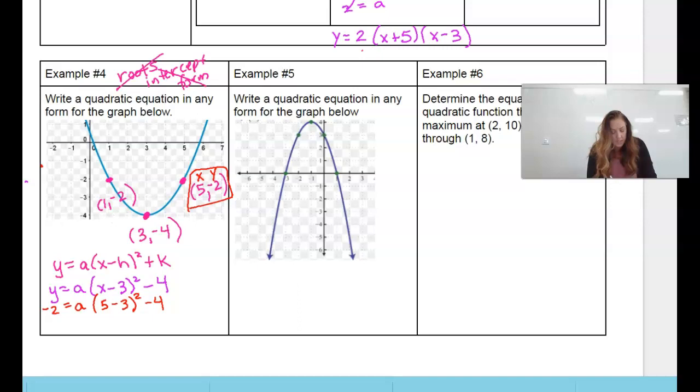So x is 5, and y is negative 2. So we'll substitute. y is negative 2. We don't know a, and x is 5. Now, this one, because we have this minus 4 at the end, I'm going to want to clean this up first. So I get negative 2 equals a times, well, 5 minus 3 is 2. 2 squared is 4. So that actually becomes 4a minus that 4 at the end. So to solve this, we're going to add 4. So 2 equals 4a, and then we'll divide by 4.